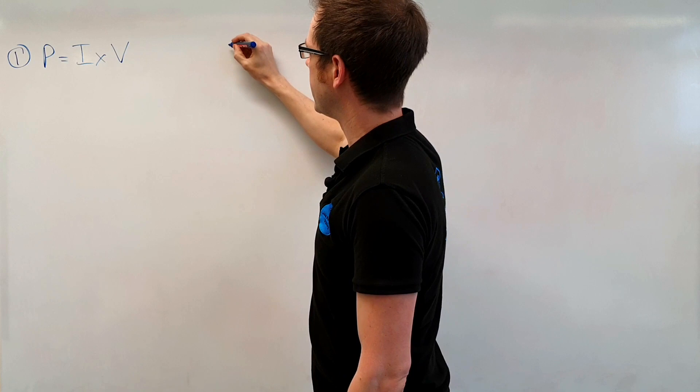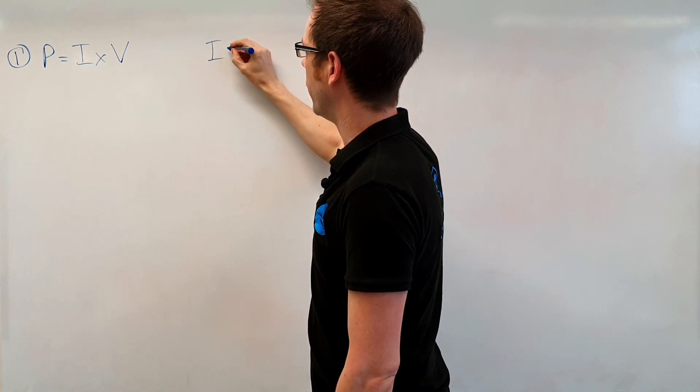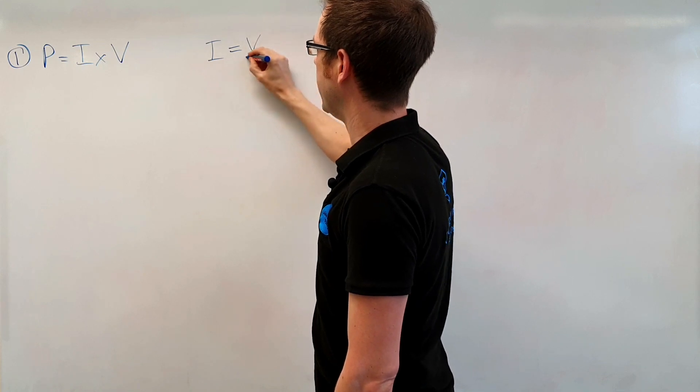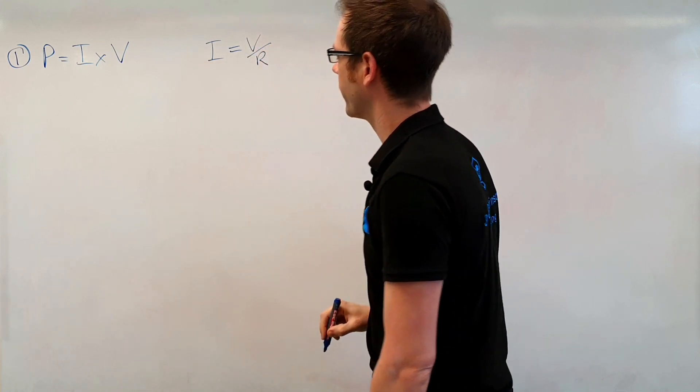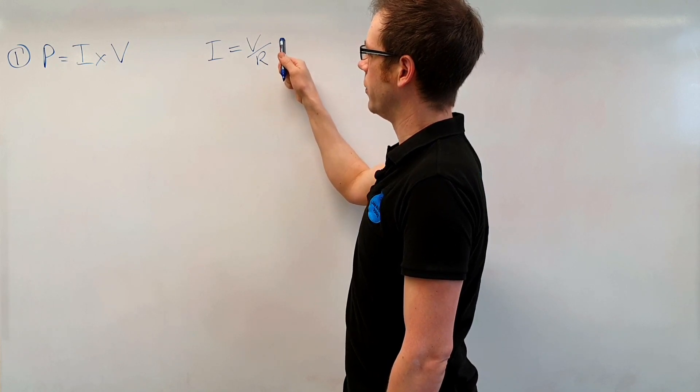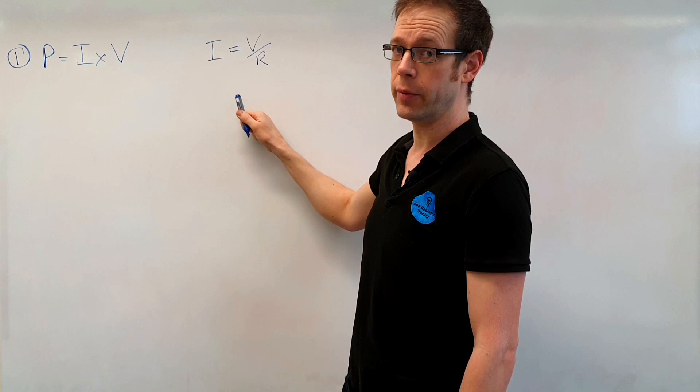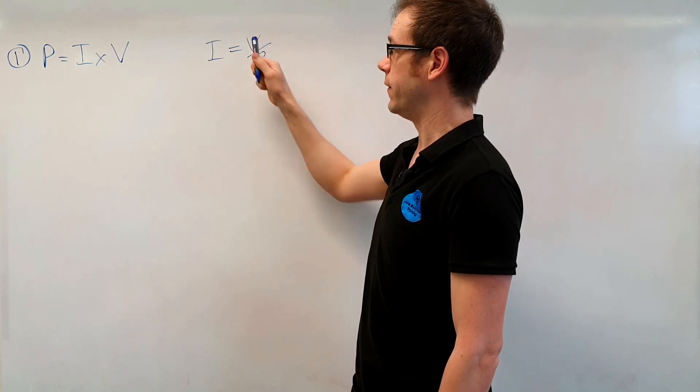So in order to do this we need to have another formula which we're very familiar with which is Ohm's law I equals V divided by R. Now what we're going to look at here is what happens when we start to manipulate this formula. So first of all we're going to rearrange this formula we're going to transpose it to make V the subject.